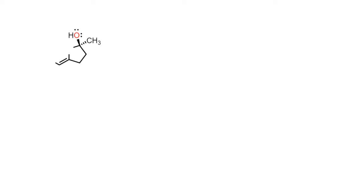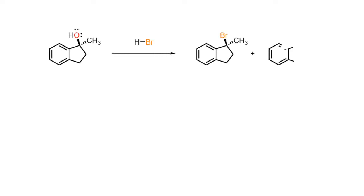When a benzylic alcohol is treated with a powerful halide acid, an SN1 reaction occurs via a benzylic carbocation that is resonance stabilised. If the benzylic carbocation happens to be prochiral, then a racemic mixture of benzylic halides results.